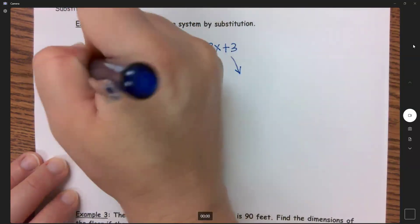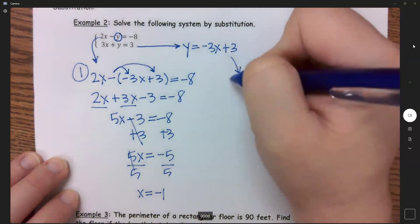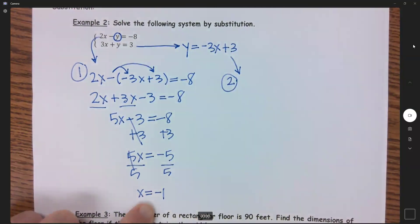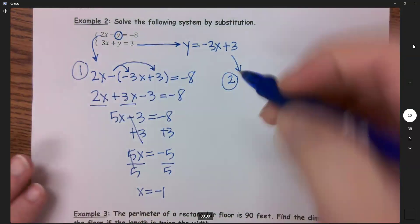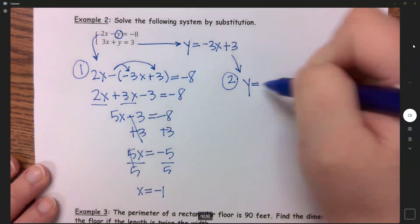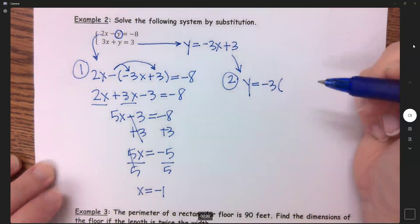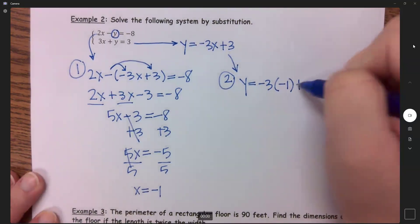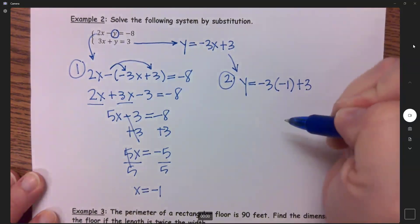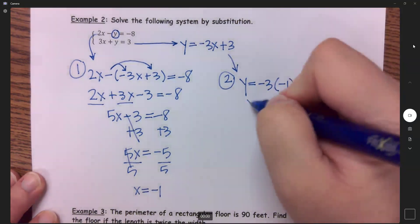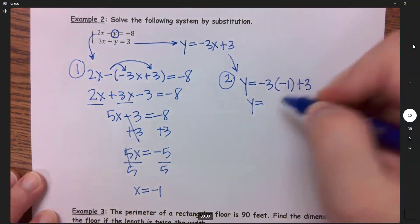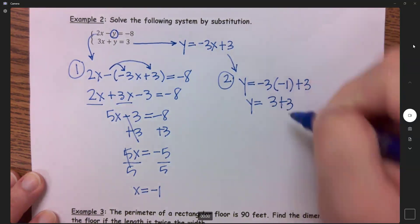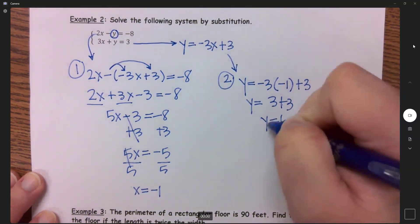So we did this first to get our x. So now second I am plugging in my x here to get my y. So we have y equals negative 3 times x equals negative 1. I'm substituting it back in. So negative times negative makes that a positive 3 and so y equals 6.